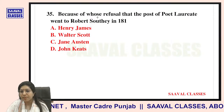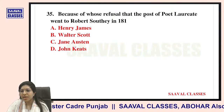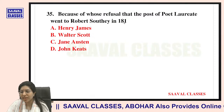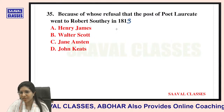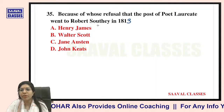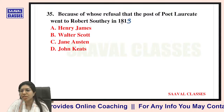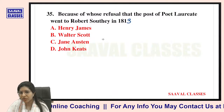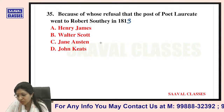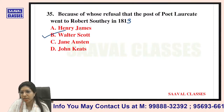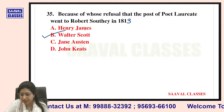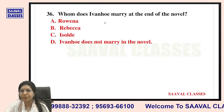Question number thirty-five: Because of whose refusal did the post of Poet Laureate go to Robert Southey in 1813? Options are Henry James, Walter Scott, Jane Austen, or John Keats. It was because Walter Scott refused that Robert Southey was selected as Poet Laureate.